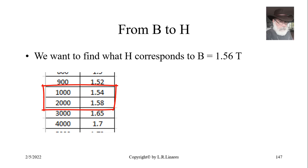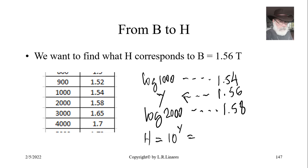But it seems that because 1.56 is halfway between 1.54 and 1.58, the temptation would be to say, oh, I know the magnetic field has to be halfway between 1000 and 2000, has to be 1500 amps per meter. Right? Wrong. Because that axis, the vertical one on the left, is non-linear. It's logarithmic.